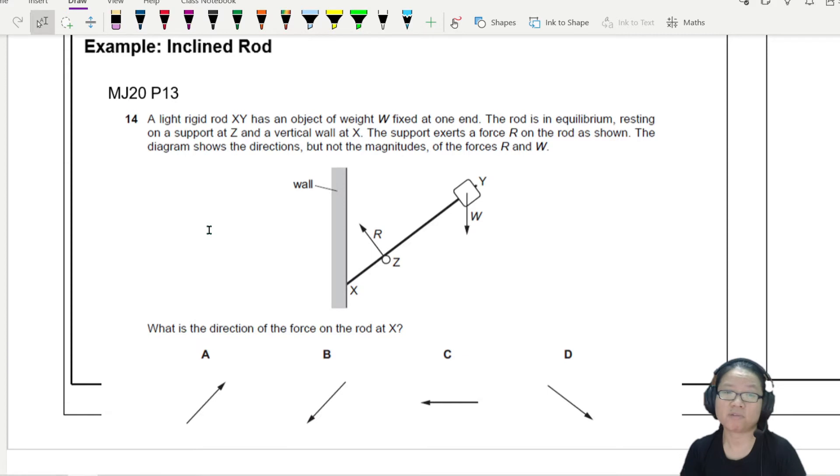There's a light rigid rod XY here. The W is fixed at one end. If it's light, I assume that the rod has no weight. The rigid rod XY has no weight; the only weight comes from this object W.